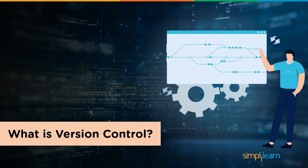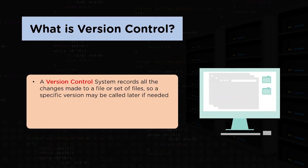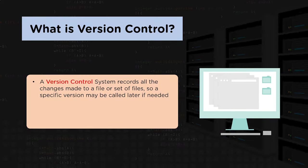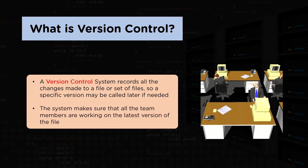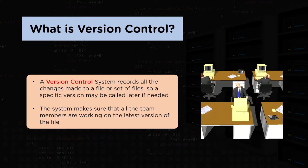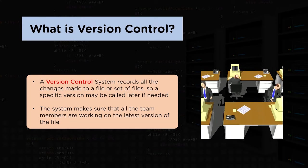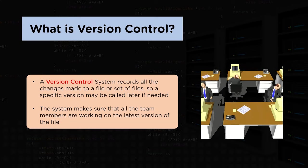Let's first have a look at what version control is. As the name suggests, version control refers to the category of software tools that make it possible for a software team to look after the changes made to the source code. The system records all changes made to a file so a specific version may be rolled back if needed in future. It keeps all team members on the same page, ensuring everyone works on the latest version and can work simultaneously on the same project.